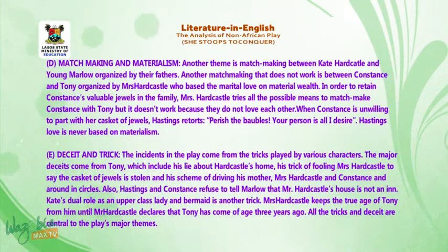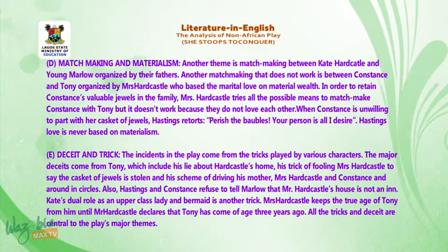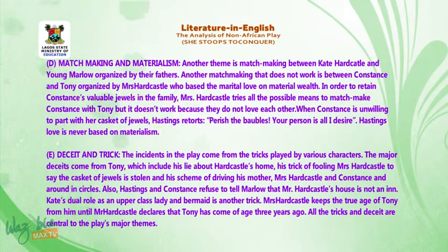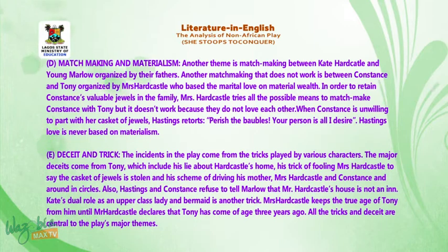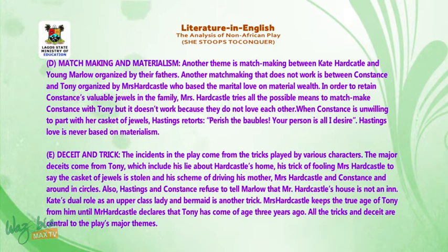Theme D: Matchmaking and Materialism. Another theme is matchmaking — between Kate Hardcastle and young Marlowe, organized by their fathers. Another matchmaking that does not work is between Constance and Tony, organized by Mrs. Hardcastle. Marlowe bases marital love on material wealth. In order to retain Constance's valuable jewels in the family, Mrs. Hardcastle tries all possible means to matchmake Constance with Tony, but it doesn't work because they do not love each other.